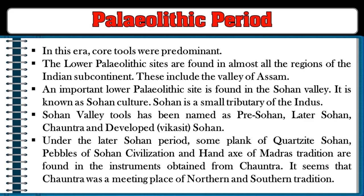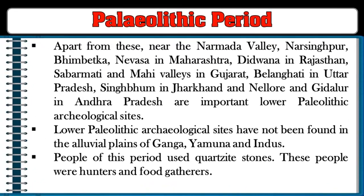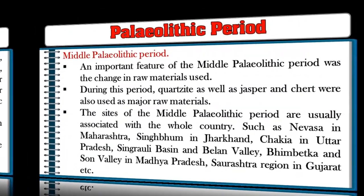Other important Lower Paleolithic sites include Narbada Valley, Narsinghpur, Bhimbetka, Nevasa in Maharashtra, Didwana in Rajasthan, Sabarmati and Mahi valleys in Gujarat, Belonghat in Uttar Pradesh, Singhpur in Jharkhand, and Nalur and Giddalur in Andhra Pradesh. However, Lower Paleolithic sites have not been found in the alluvial plains of the Ganga, Yamuna, and Indus. People of this period used quartzite stones and were hunters and food gatherers.